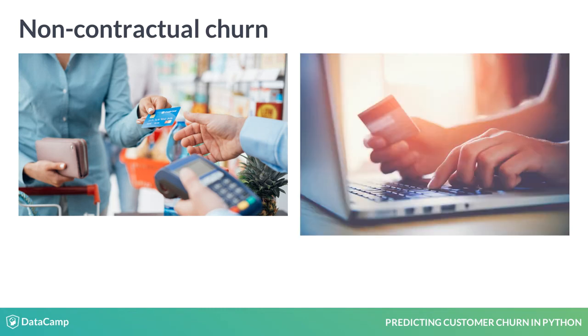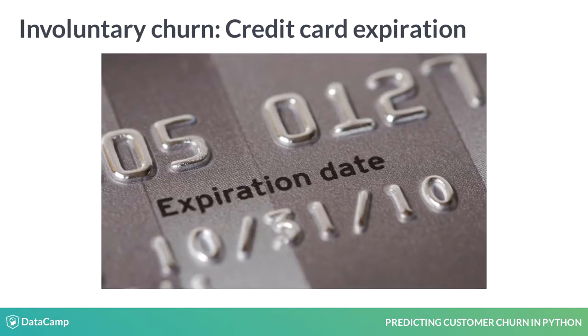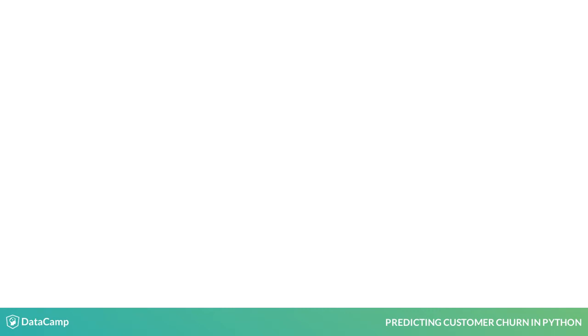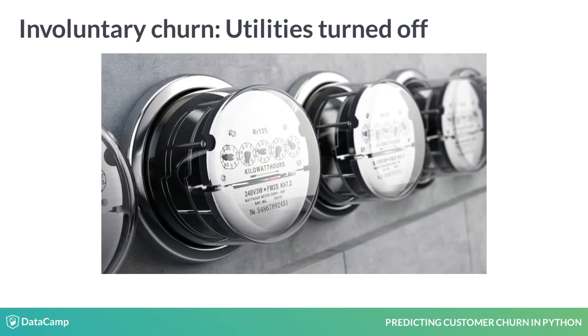Finally, involuntary churn is when a churn occurs not at the request of the customer, and includes credit card expiration or utilities being shut off by the provider.